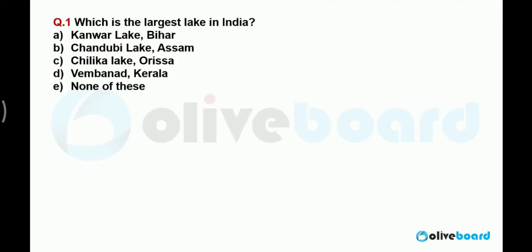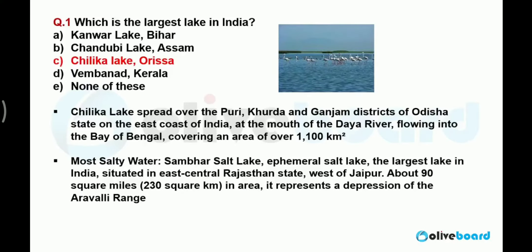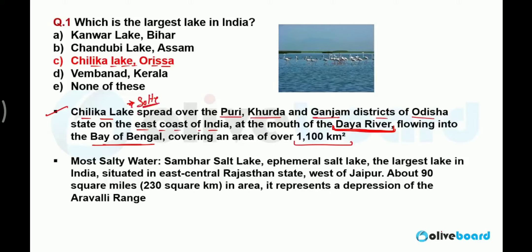Starting with question number one: which is the largest lake in India? The correct answer is Chilka Lake. Chilka Lake is situated in Odisha and is the largest lake in India. Remember, it is a saline water lake — a salty water lake. Chilka Lake is spread over Puri, Khurda, and Ganjam districts of Odisha on the east coast of India, at the mouth of the Daya River, which flows into the Bay of Bengal. It covers an area of 1,100 square kilometers.